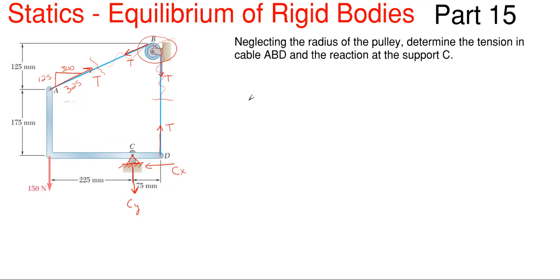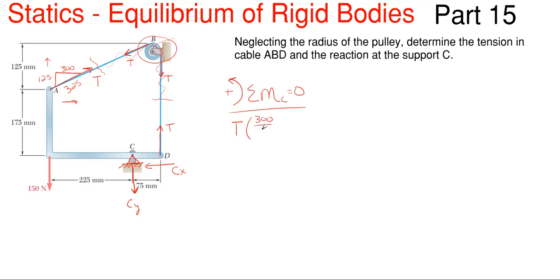Since we have so many unknowns and T is exactly the same, we are going to sum moments about our reaction at C. By doing this, C sub X and C sub Y completely drop out from our equation, and we are left with these T values, which T is the same at each location. For the horizontal component: T times 300 over 325, with a vertical distance of 175 millimeters — rotating clockwise about C, so that's negative. For the vertical component: T times 125 over 325, with a horizontal distance of 225 — also rotating clockwise, so negative. Remember, you always divide by the hypotenuse of your dimension triangle and multiply by the dimension measuring in that component's direction.